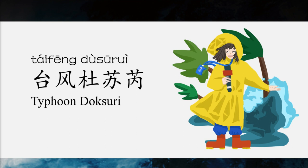Do you know that the word 'typhoon' is a foreign loan word from Chinese? Is that right? Yes. 是啊。台风 in Chinese is 台风. 英文的台风其实算是来自中文台风的外来词。The name for 台风 Doxury in Chinese is translated as 杜苏锐.